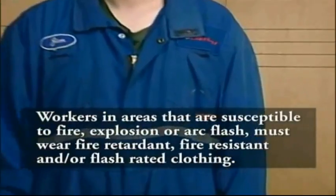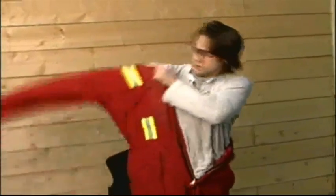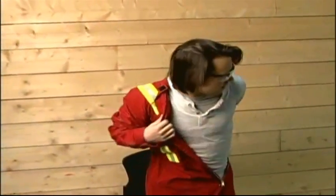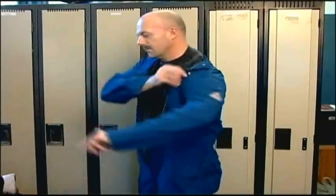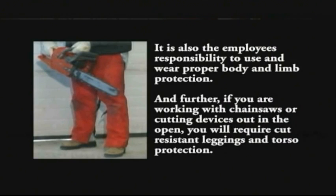Depending on the worksite hazards, you may be required to wear limb and body protection. If there is a danger to hand, arm, leg, torso, or skin, it's the employer's responsibility to ensure the worker wears properly fitted hand, arm, leg, or body protective equipment appropriate to the work, the worksite, and the hazards involved. Workers must ensure that clothing worn underneath flame-resistant outerwear and against their skin is made of fire-resistant fabrics or natural fibers that will not melt when exposed to heat. Check with your supervisor about the requirements for wearing hoodies on your site. It is also the employee's responsibility to use and wear proper body and limb protection. If you are working with chainsaws or cutting devices out in the open, you will require cut-resistant leggings and torso protection. Protect your knees from injury as required.